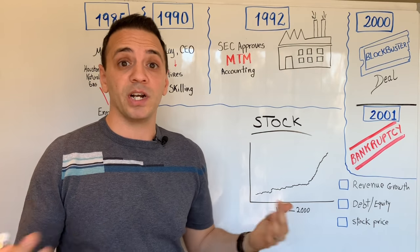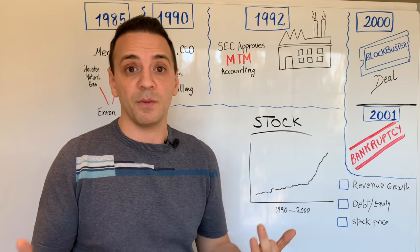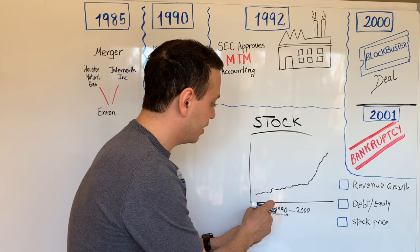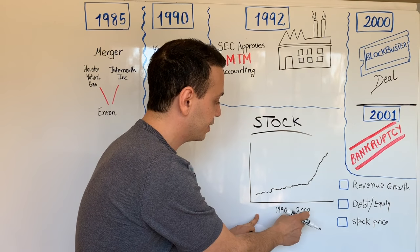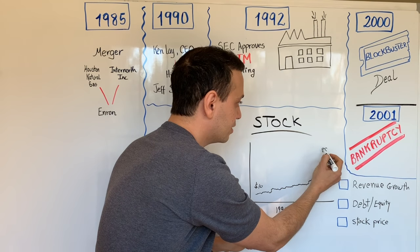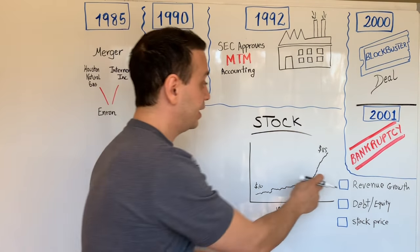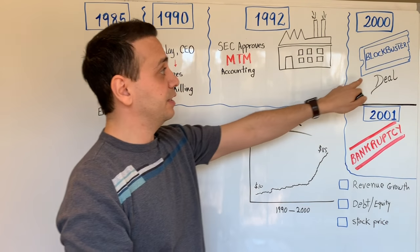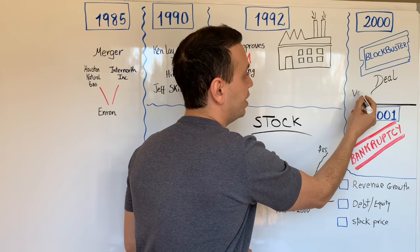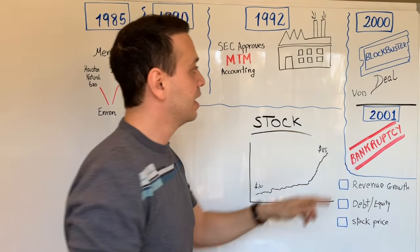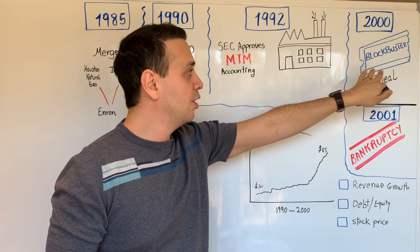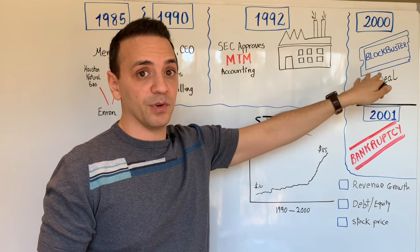The effect of using the mark-to-market technique was incredible for revenue and for stock performance in general. As you can see, the stock went from 1990 to the year 2000 from somewhere around $10 a share to somewhere around $85 a share. Also in the year 2000, Enron entered a deal with Blockbuster to provide a video-on-demand service.